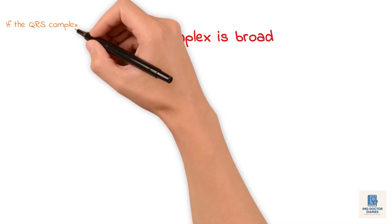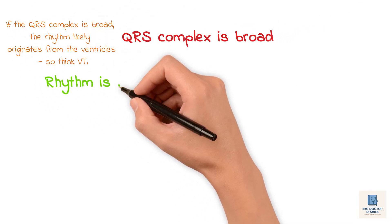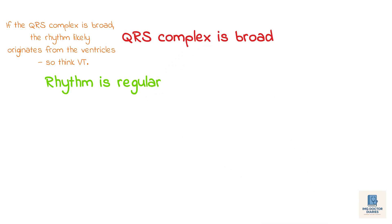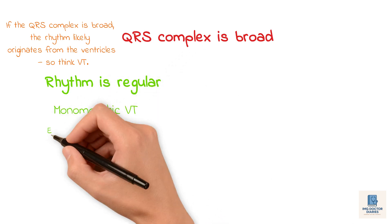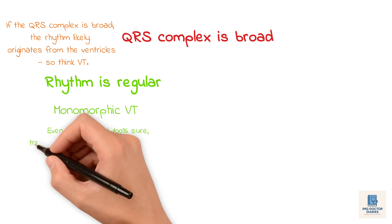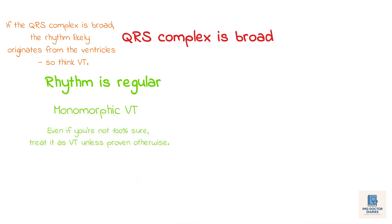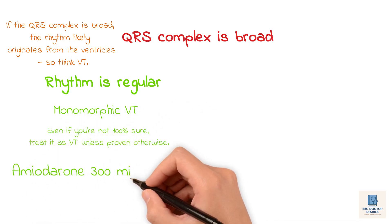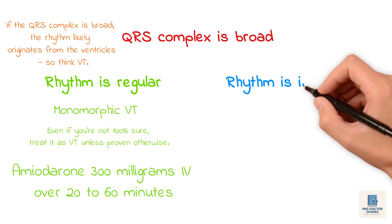If the QRS complex is broad, the rhythm likely originates from the ventricles, so think VT. If the rhythm is regular, assume it's monomorphic VT. Even if you're not 100% sure, treat it as VT unless proven otherwise. Give amiodarone 300 mg IV over 20 to 60 minutes, then start an infusion of 900 mg over 24 hours.